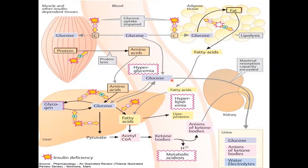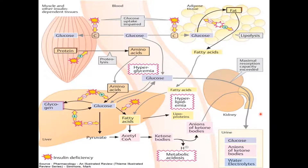Now let's take a look at the muscle cells. In DKA, these cells cannot take in glucose, which further worsens the hyperglycemia. Moreover, muscle cell proteins are broken down into amino acids to serve as building blocks for glucose. In the kidney, hyperglycemia induces osmotic diuresis, as high sugar levels overwhelm the kidneys.